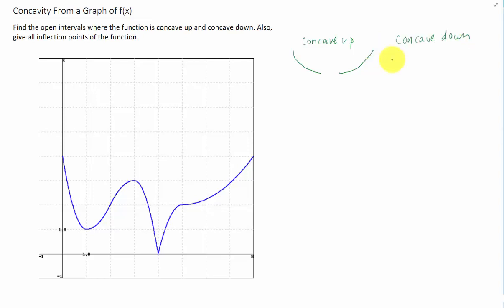A function is concave down and increasing if its shape looks something like this, and it's concave down and decreasing if its shape looks something like that.